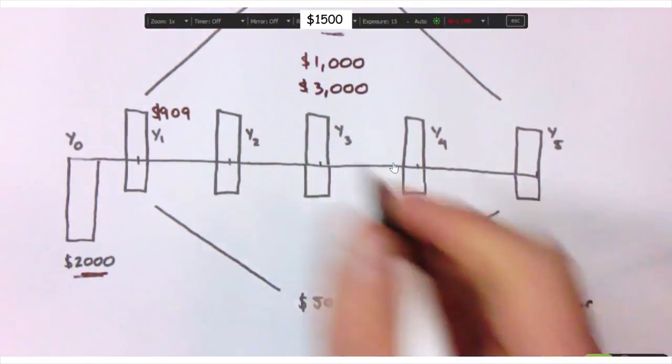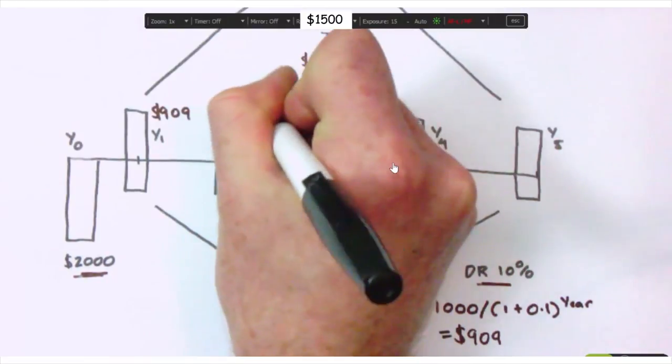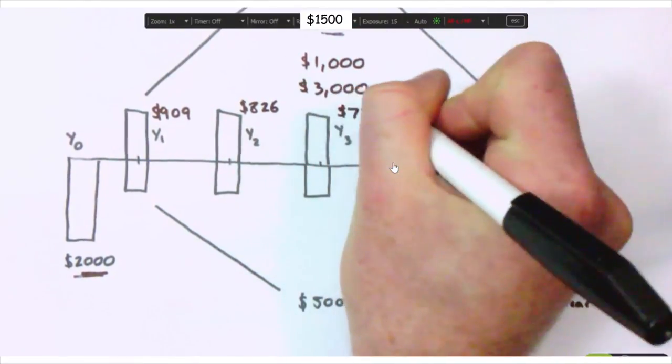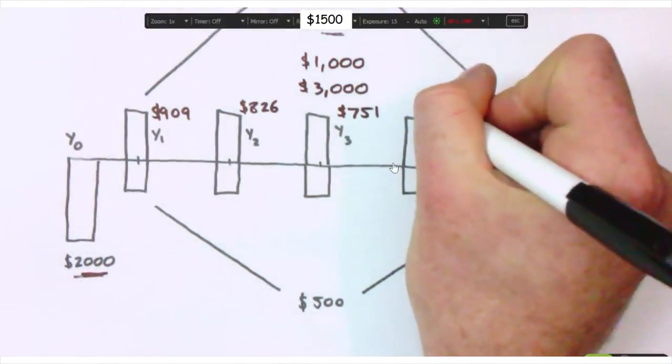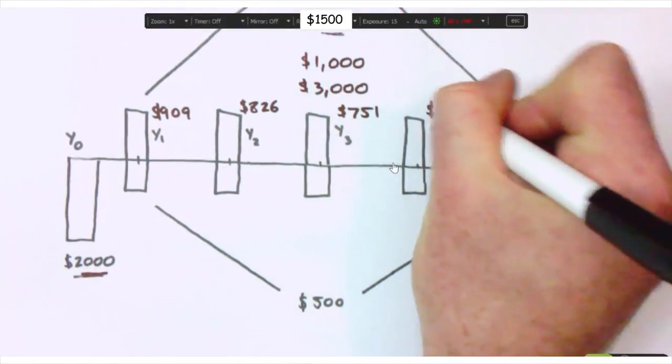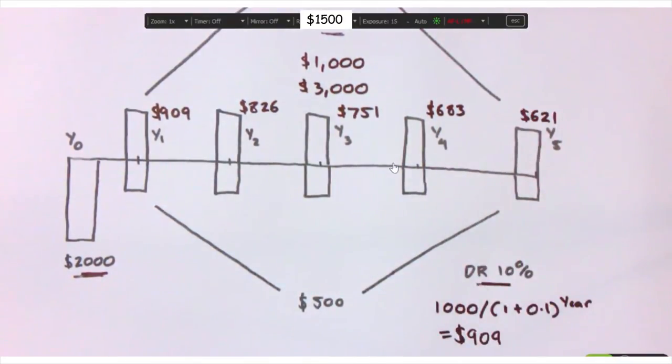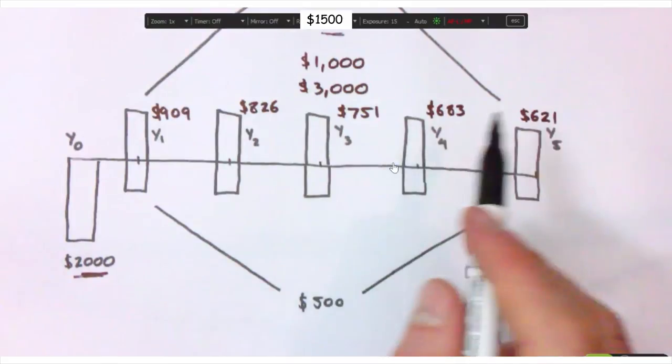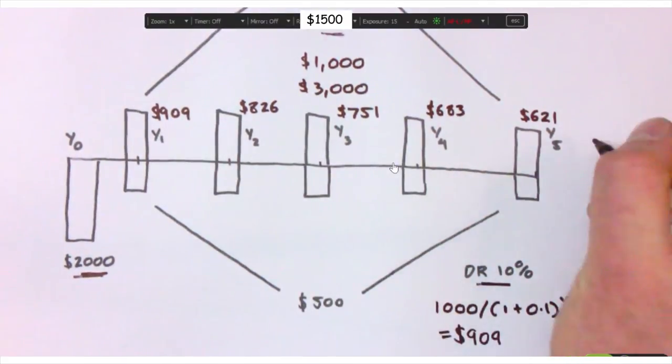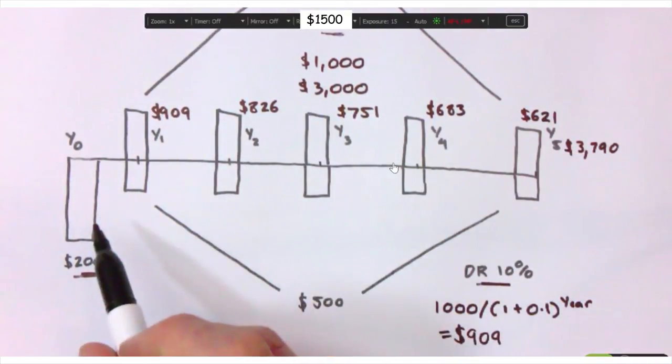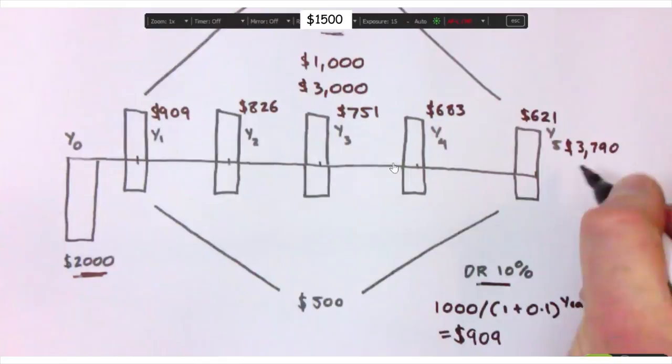In the second year, it's even less, it's $826. In the third, $751. In the fourth and fifth, it's $683 and $621, respectively. So summing these net present benefits together gives a total of $3,790 minus your initial cost of $2,000 is $1,790.